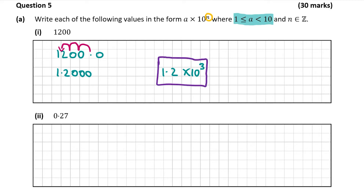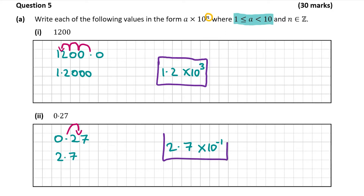Now let's look at part 2. This time there is already a decimal point, however the number is smaller than 1 so we need to make it bigger. We're going to move the decimal point to the right — one place — so we now have 2.7. When it moves to the right, you get a negative power. It moved to the right one place, so the power is −1. The a is 2.7, so the answer is 2.7 × 10 to the power of −1.